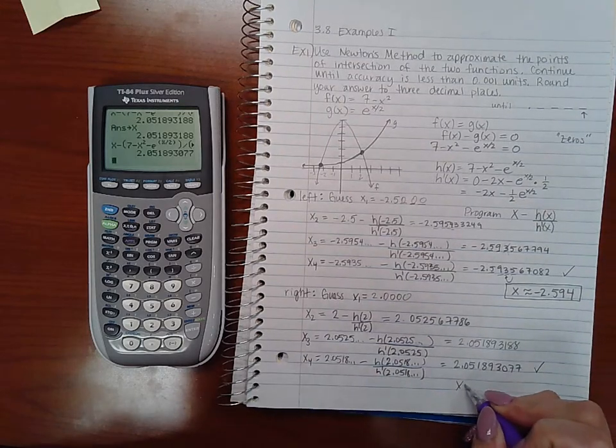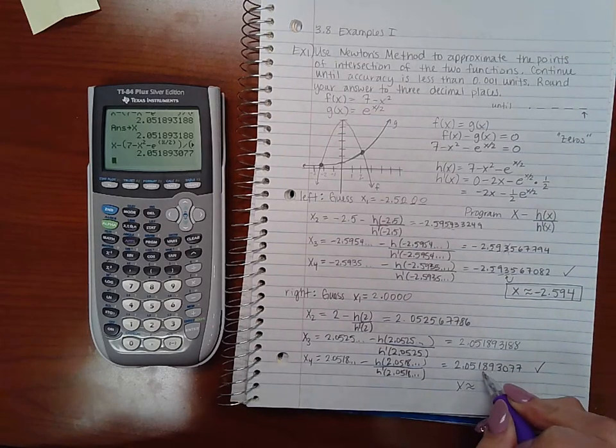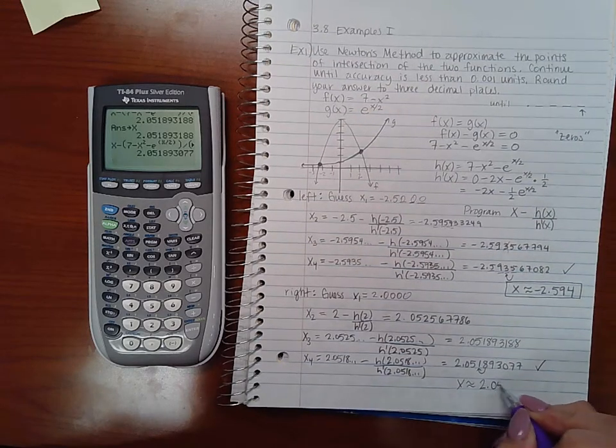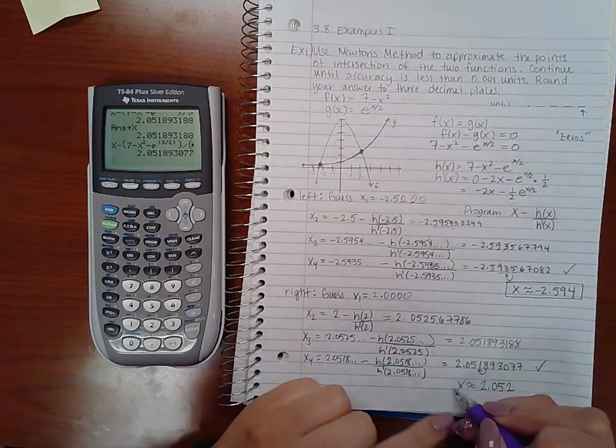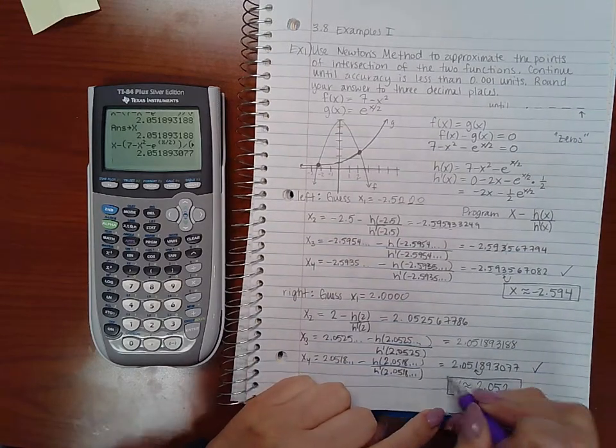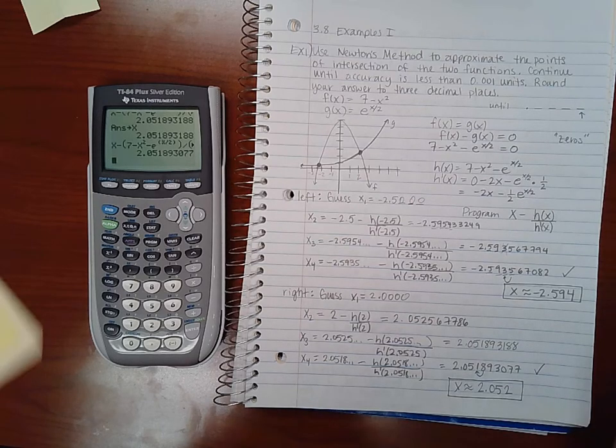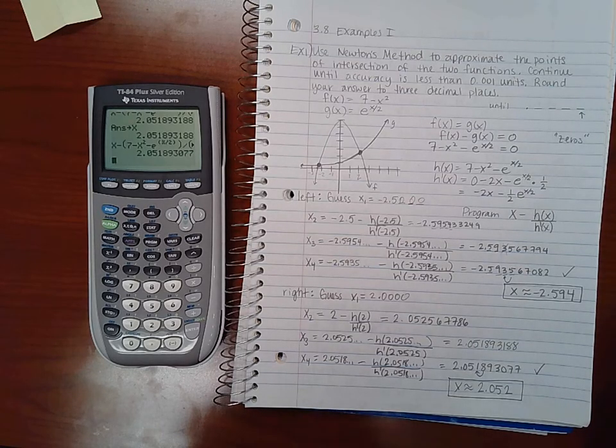And that second value, if we round it to three decimal places, the 8 will change the 1. So you get 2.052 as your second value there. And that is all they asked us to find, so we are done with this particular problem.